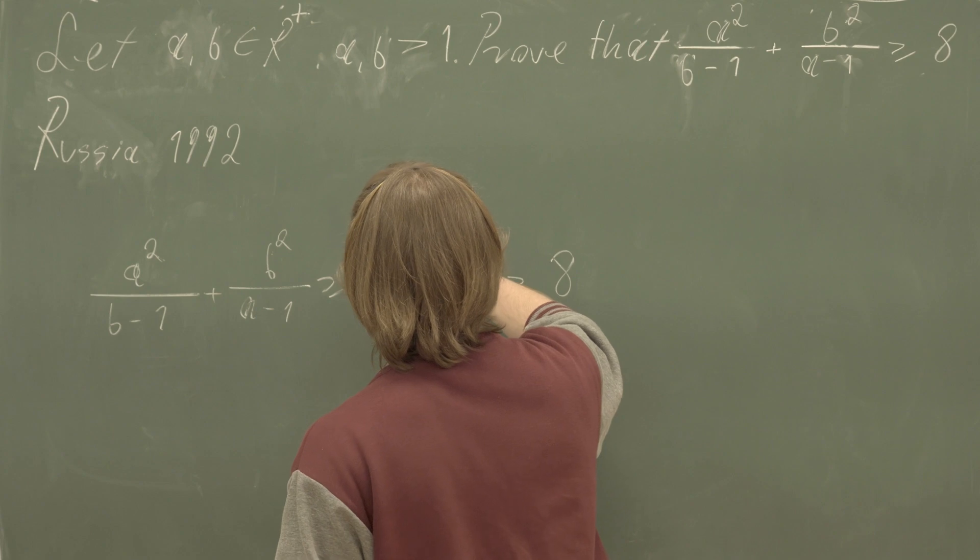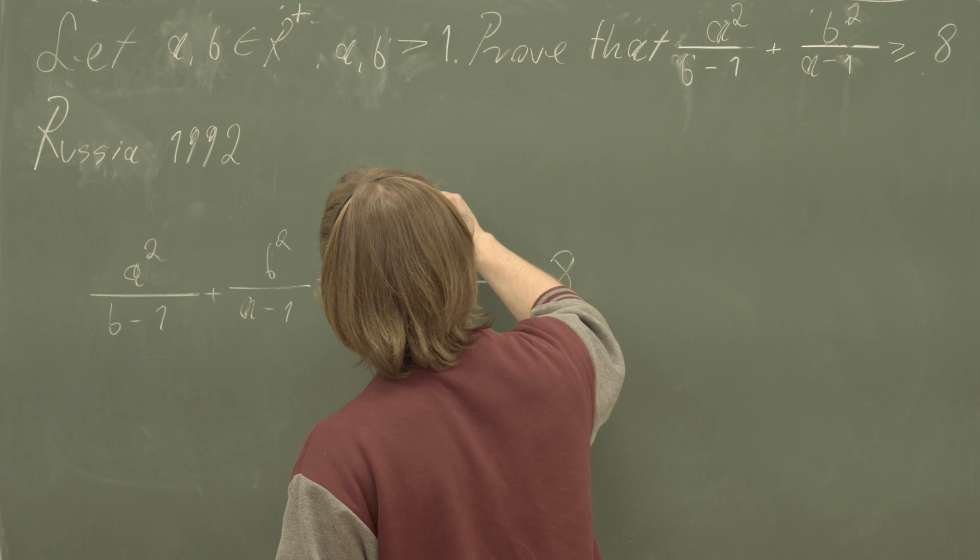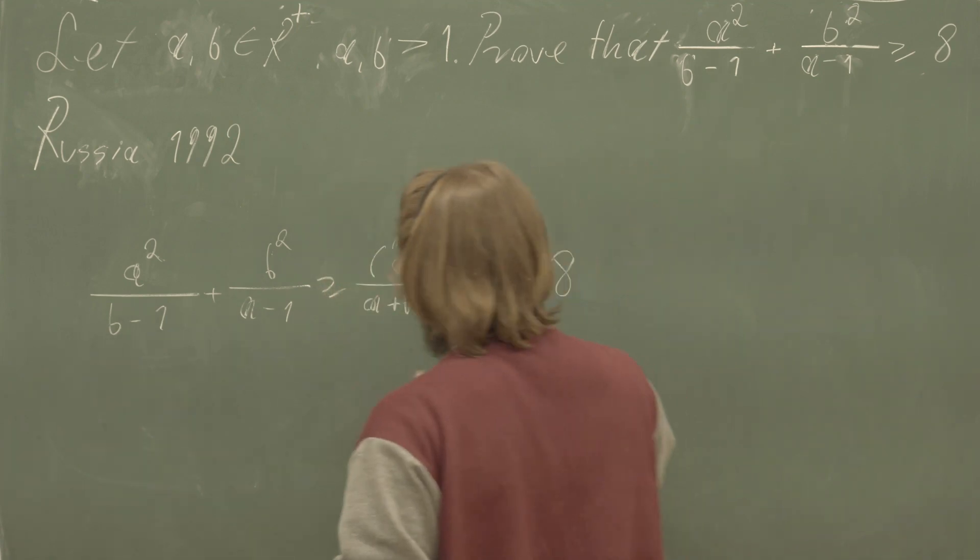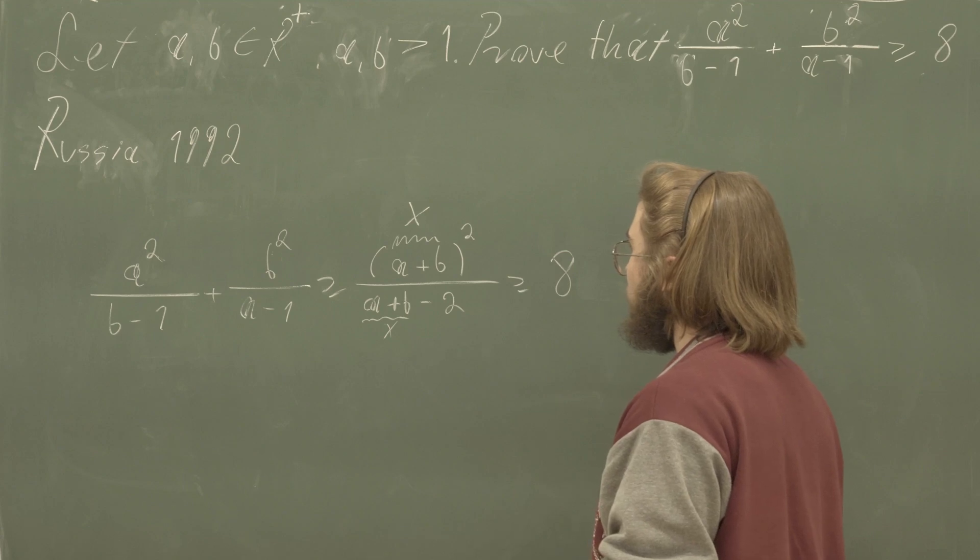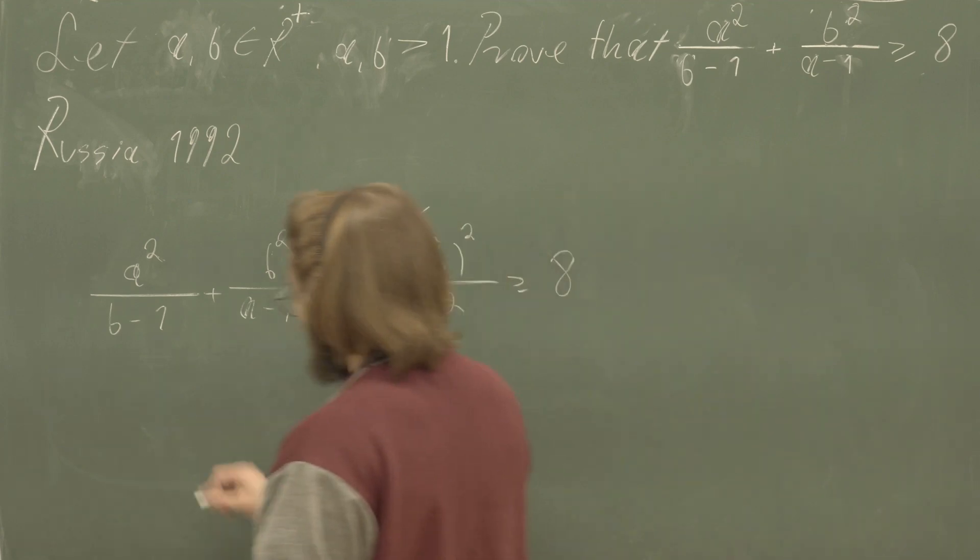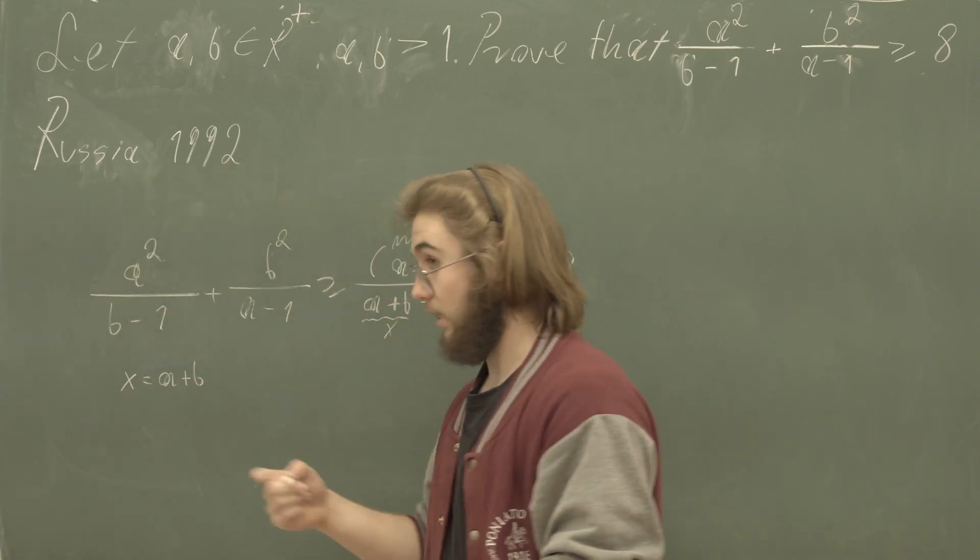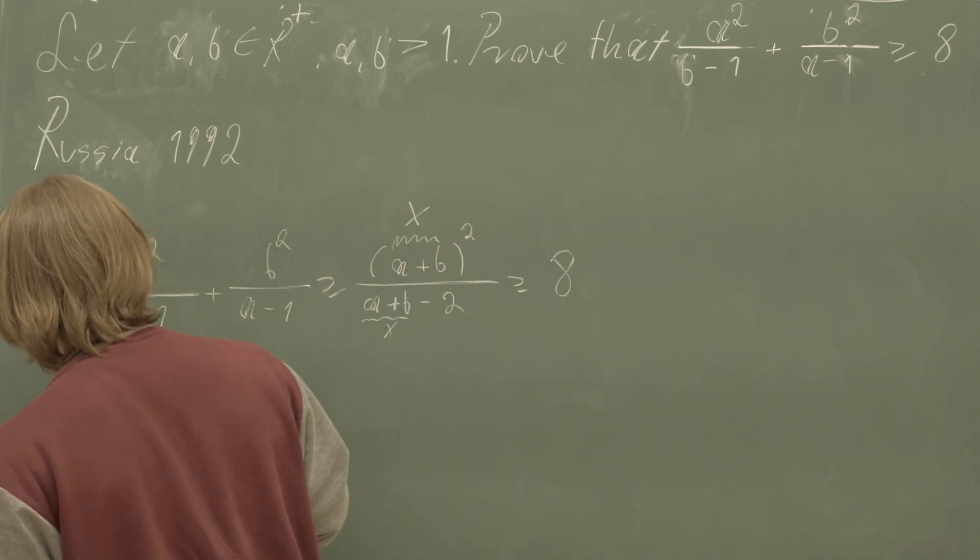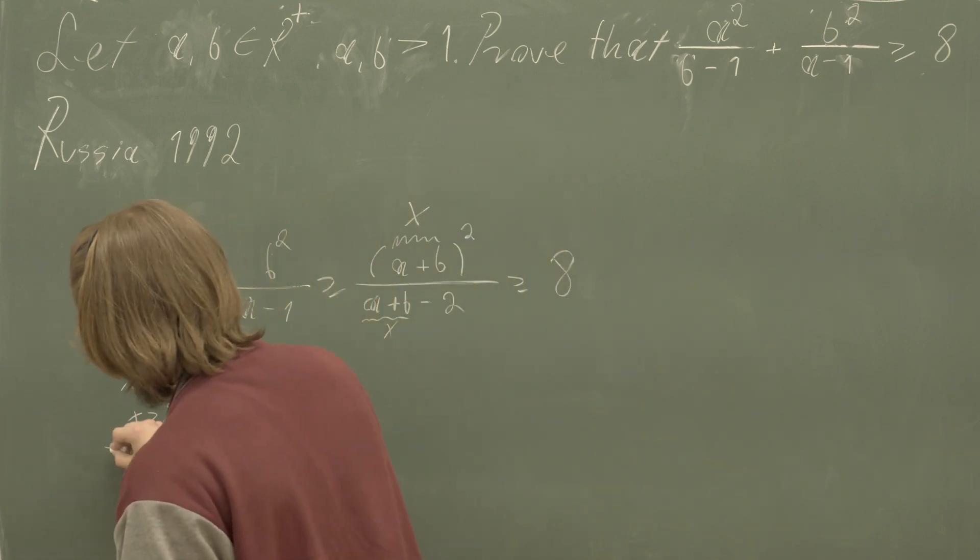I would like to take myself a new variable. Let's say I will call it x. I would like to say x is equal to a plus b. And by the condition that a and b are both strictly greater than one, we also get that x is going to be strictly greater than two right there.